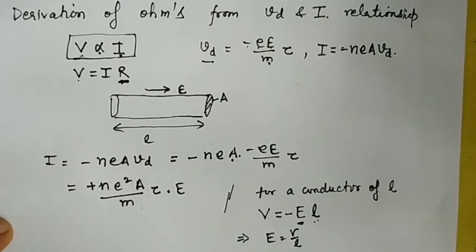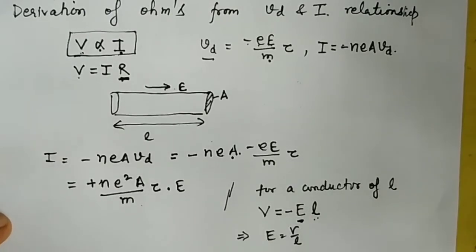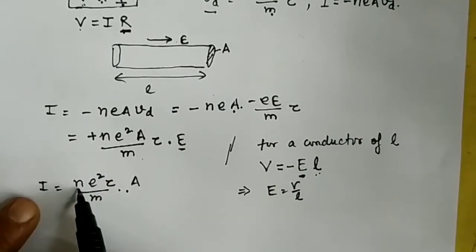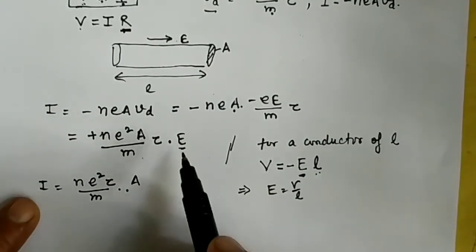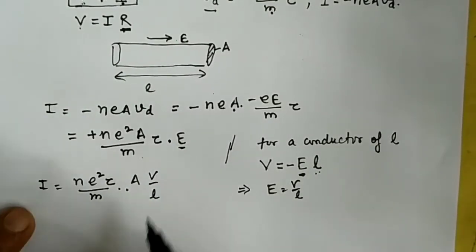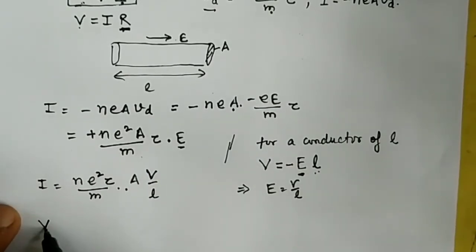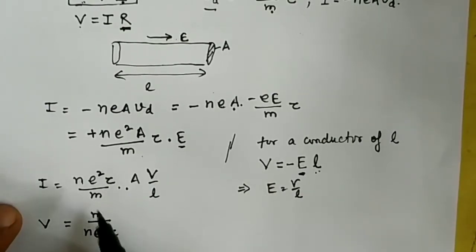Now put this value in the above equation. We get I equals n e squared tau divided by m A, and the electric field is V divided by l. To calculate V, we get V equals m divided by n e squared tau times l by A times I.